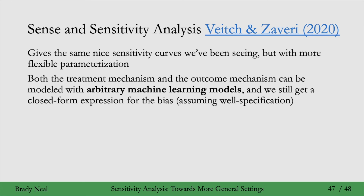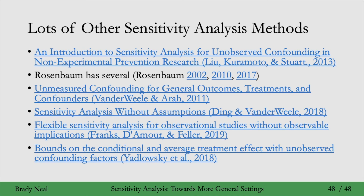Go ahead and check out that paper if you're interested. It's important to note that there are tons of different sensitivity analysis methods — I've just picked out a few here, but it's really a frontier of research. Here are some useful papers: the first is a review paper; Rosenbaum is a key figure in sensitivity analysis whose work easily could have shown up in the course; and these others are more flexible sensitivity analyses. That was the focus of this section — moving toward more general settings with more flexible functional forms, potentially not making assumptions about the functional form at all. But you're always going to have to constrain how the unobserved confounding is happening in some way. In other words, you always have to make assumptions somewhere when doing sensitivity analysis.